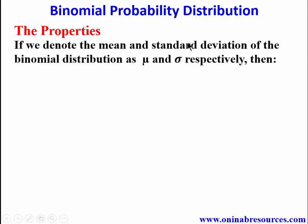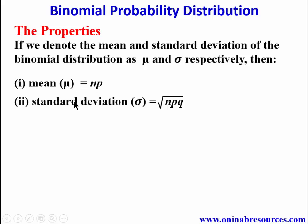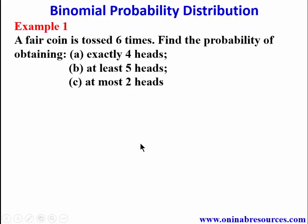Now we look at the properties of binomial probability distribution. If we denote the mean and standard deviation of the binomial distribution as mu and sigma respectively, then the mean mu equals np, the standard deviation sigma equals the square root of npq, and the variance sigma squared equals npq.